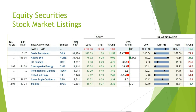Where it reads percentage CHG, that stands for the percentage change in price from the previous day. Therefore, Chesapeake Energy's price per share of stock increased by 3.17%. The column that reads YTD percentage CHG represents the change in price year to date — the percentage price change so far since the beginning of the current year. Therefore, Chesapeake Energy's stock has lost 32.8% of its value since the beginning of the year.